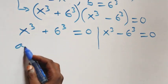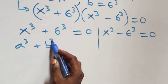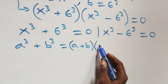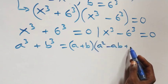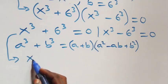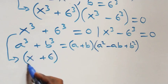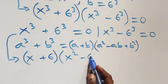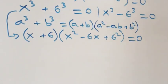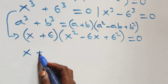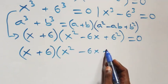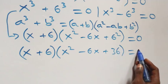Solving the first case, we use the sum of cubes identity: a^3 + b^3 = (a + b)(a^2 - ab + b^2). This becomes (x + 6)(x^2 - 6x + 6^2) = 0, which is (x + 6)(x^2 - 6x + 36) = 0.